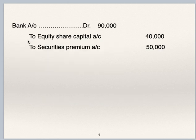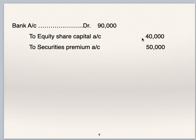The entry for right shares: bank account debit to equity share capital and to securities premium. 4,000 right shares are issued at Rs 22.50 per share. Bank account debit Rs 4,000 × Rs 22.50; to equity share capital account Rs 4,000 × Rs 10 = Rs 40,000; to securities premium account Rs 4,000 × Rs 12.50 = Rs 50,000. So equity share capital account credit side by bank Rs 40,000, and securities premium account credit side by bank Rs 50,000.